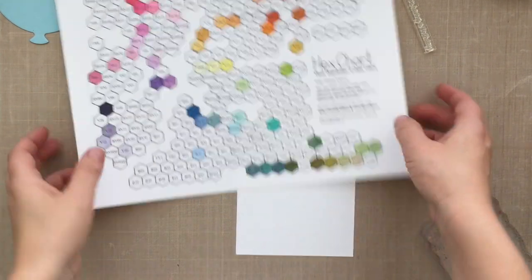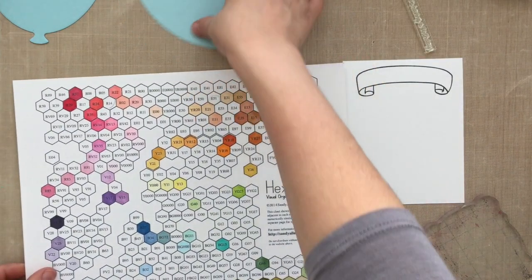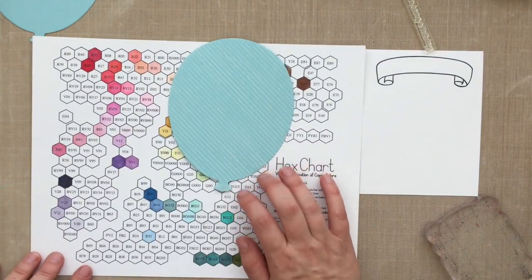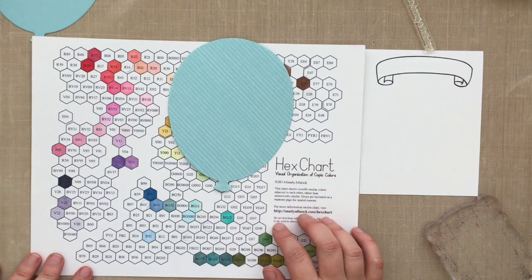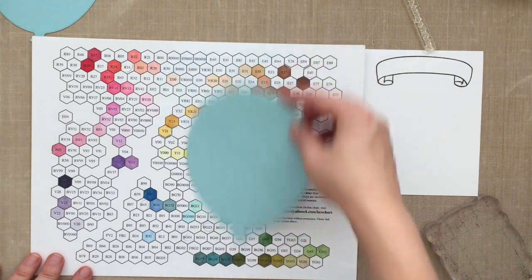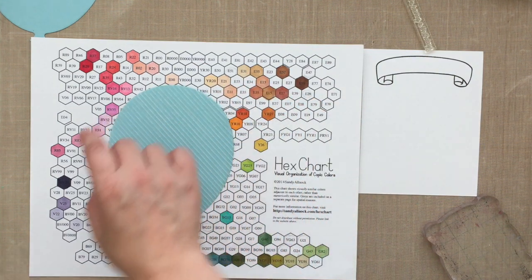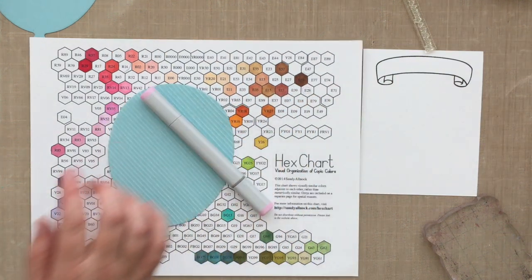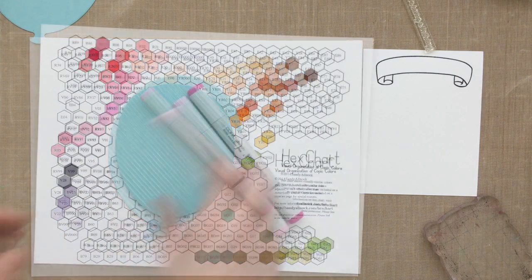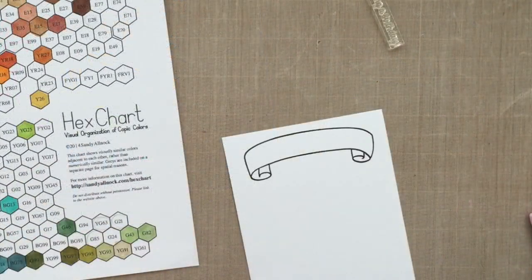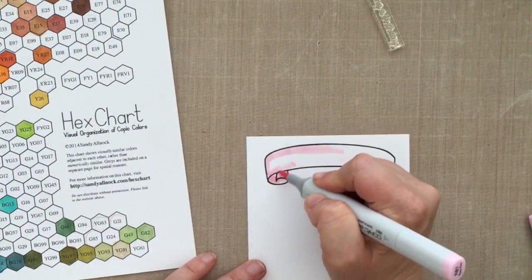This is the hex chart by Sandy Alnac that she has created and is selling over on her blog. It's absolutely brilliant. The downloads from the Copic website are organized by number, but with her hex chart they're organized by color. So you'll find colors that you had no idea went together that do. I'm using R81, RV52, and RV55 I think are the three colors I'm going with.